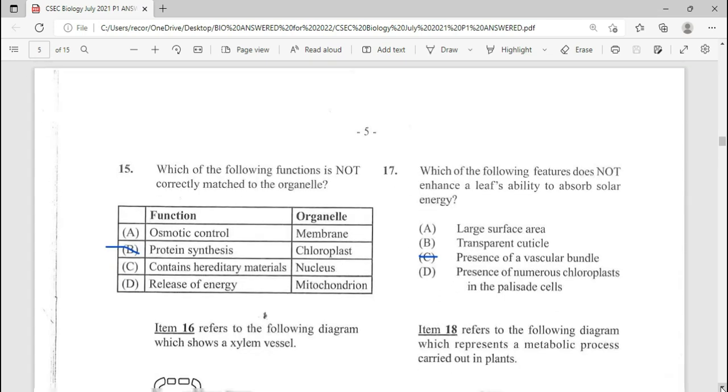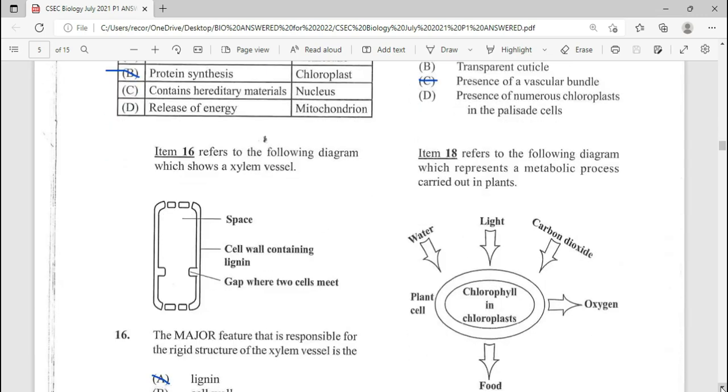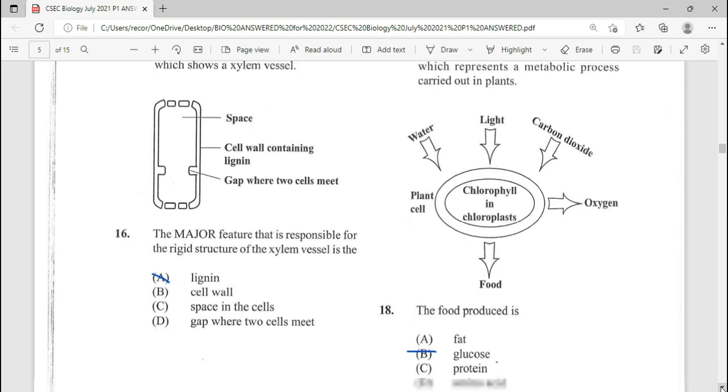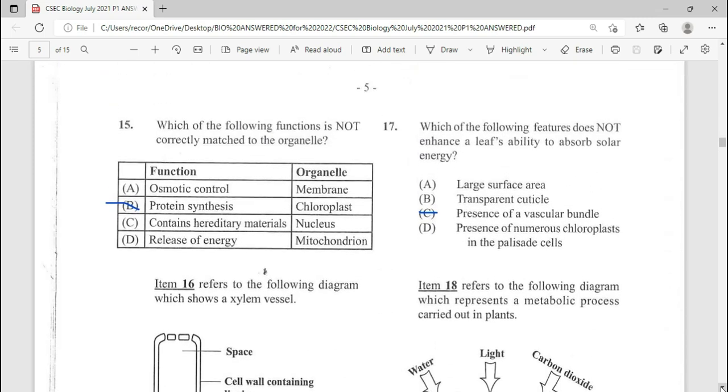We're moving on to number 15, which of the following function is not correctly matched to the organelle. Answer there is going to be B. Make sure that you read the option. Item 16 refers to the following diagram, which shows a xylem vessel. A major feature that is responsible for the rigid structure of a xylem vessel is the lignin. The lignin makes it tough. Now, this would have been on the January 2022 exam. It was really different.